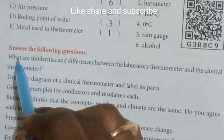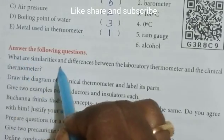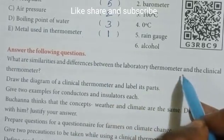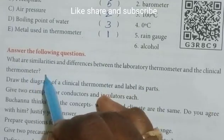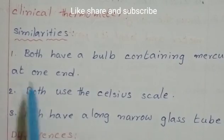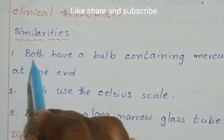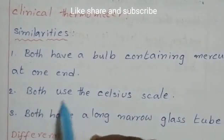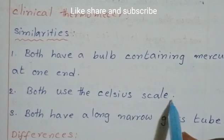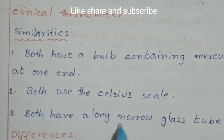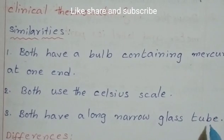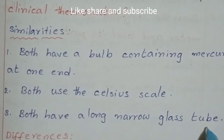Question and answers. What are the similarities and differences between the laboratory thermometer and the clinical thermometer? Similarities: both have a bulb containing mercury at one end, both use the Celsius scale, and both have a long narrow glass tube.